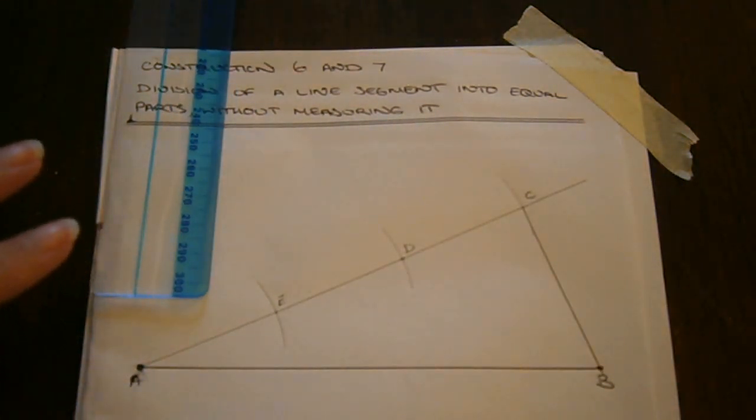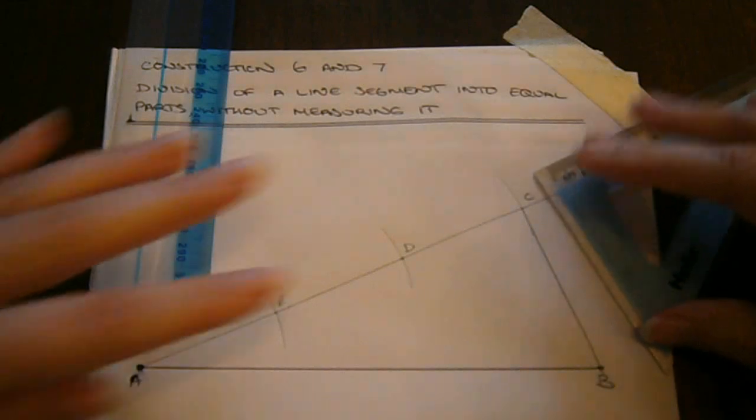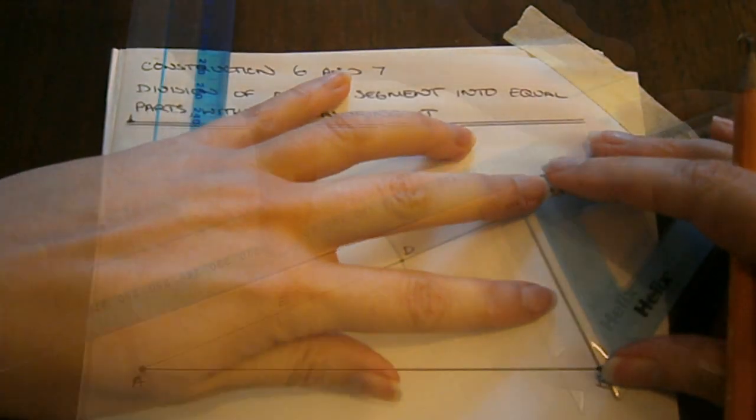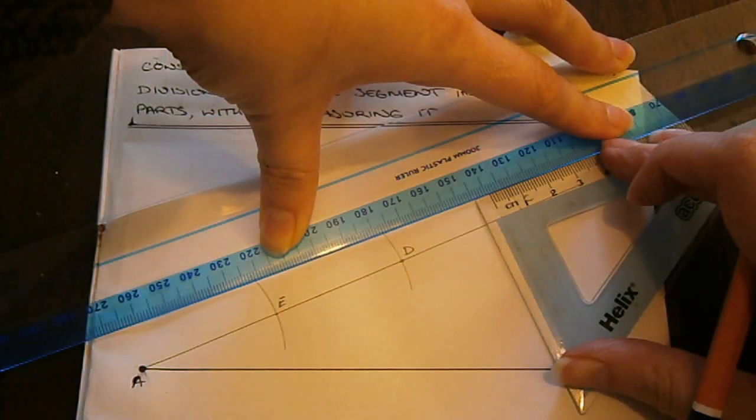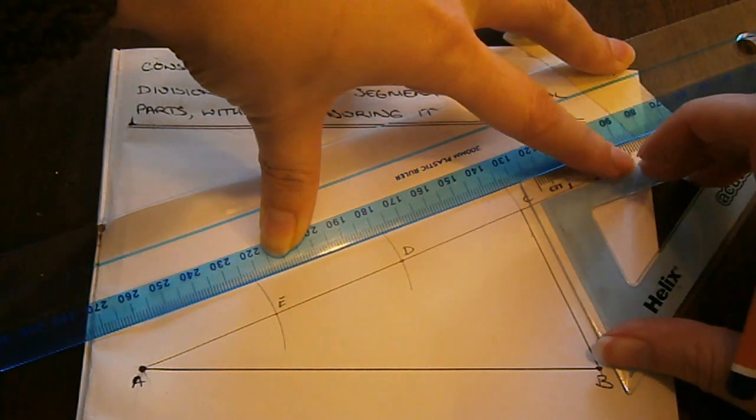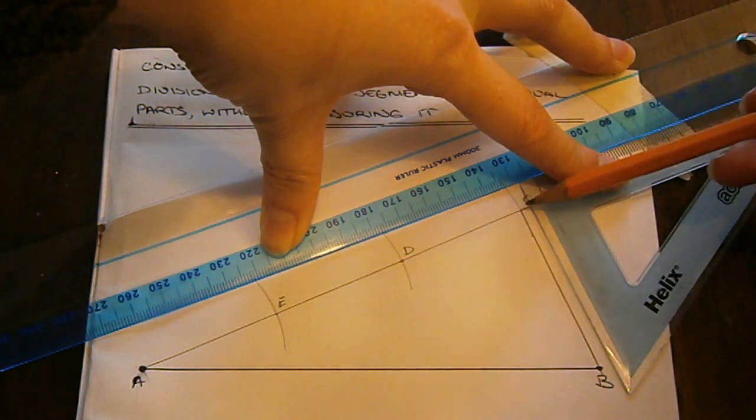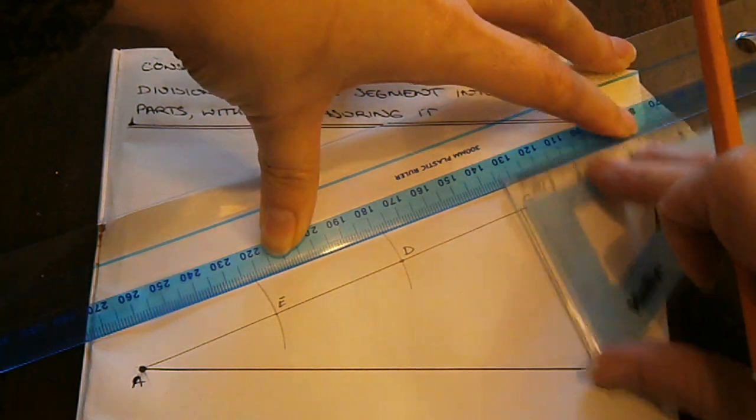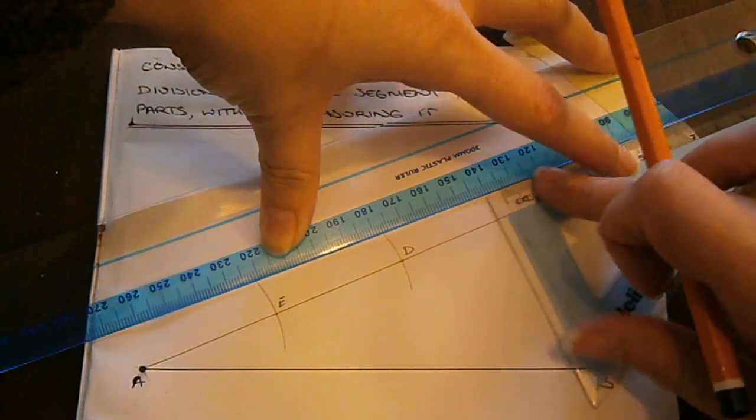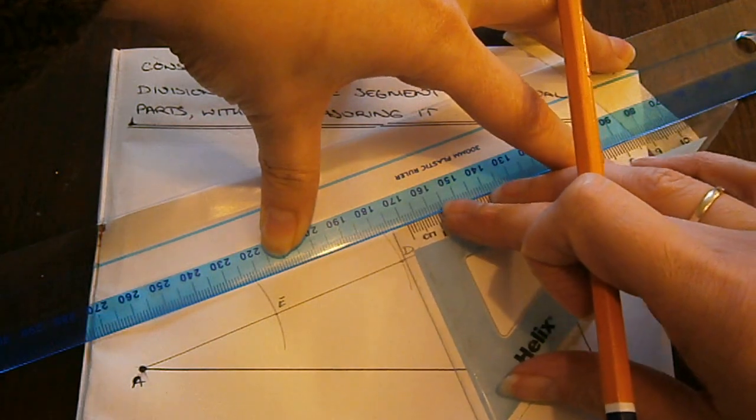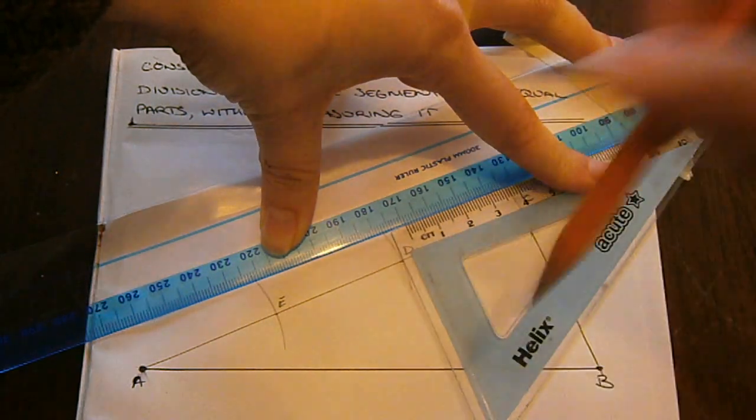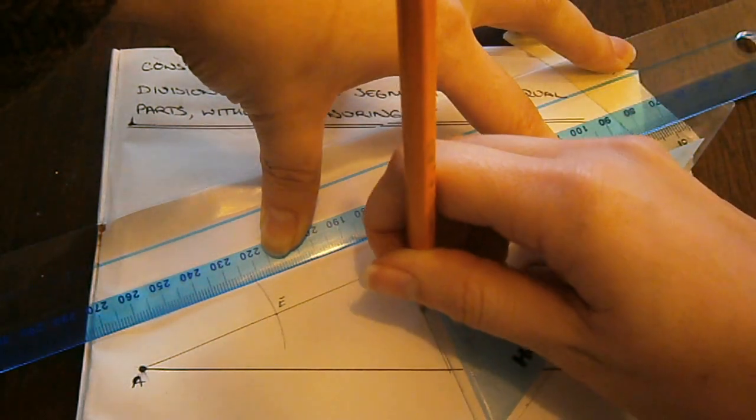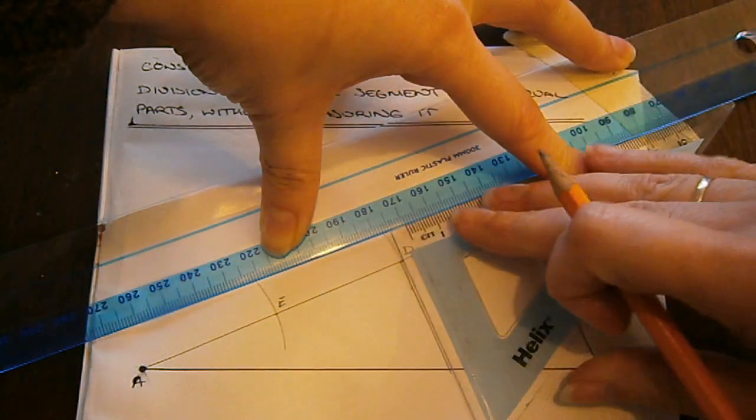I take a set square and line it up on the line CB. I have my slide that I can slide the set square along, ensuring that any line is parallel to this line CB. So I slide my set square up to the point D, and I draw a new line through D parallel to CB.